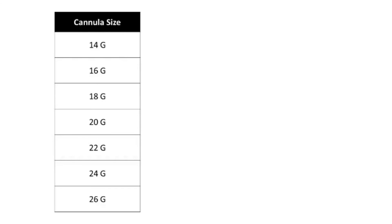Remember the gauge numbers with a gap of 2. Start from 26, then 24, 22, 20, 18. Then go directly to 17 and 16, and finally with a gap of 2 again, 14. So the sequence is: 26, 24, 22, 20, 18, 17, 16, and 14.